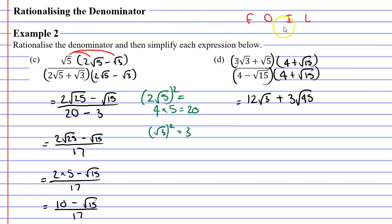Moving on to the inner terms: root 5 times 4 gives us plus 4 root 5. Moving on to the last terms — root 5 and root 15: 5 times 15 is 75, so we get plus root 75.